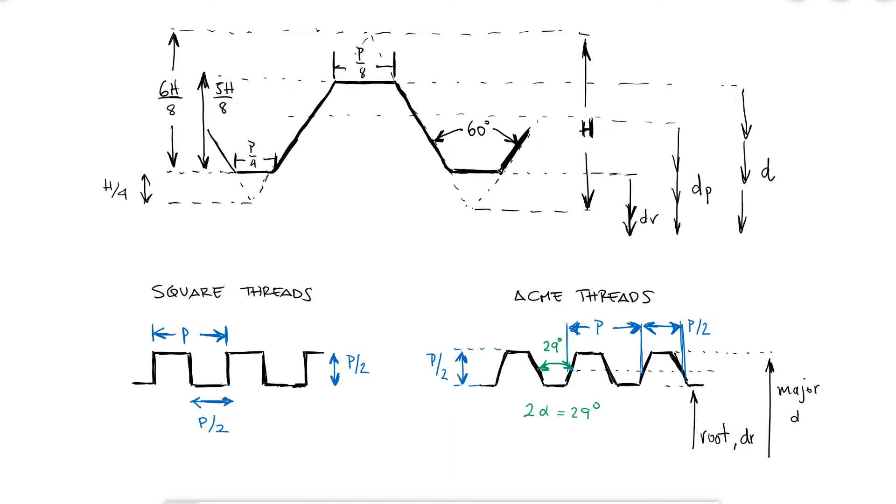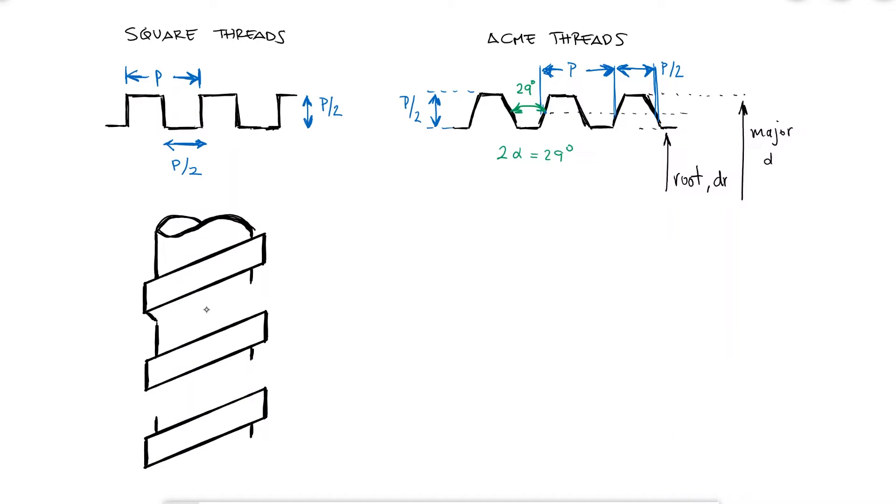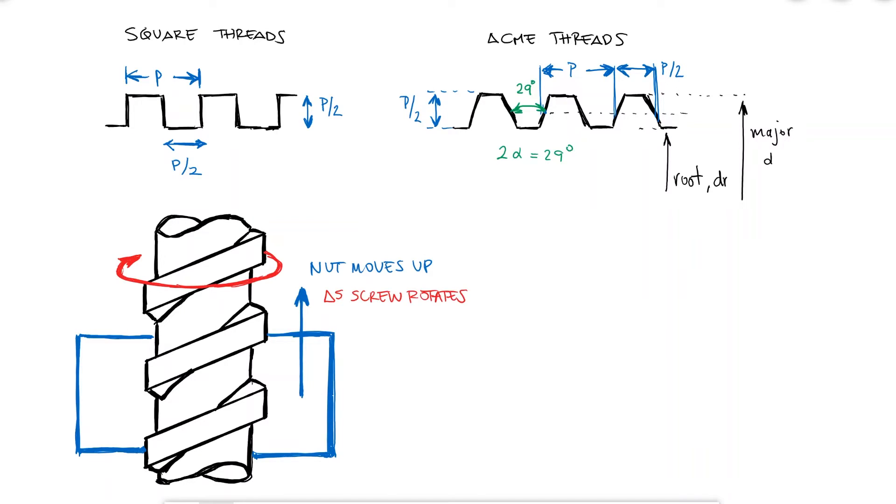As mentioned at the beginning of this video, power screws are used to transform angular motion into linear motion. For example, as the screw itself rotates in place without translation in the direction of the screw axis, the nut element around it will move up or down. Worth noting here are three things.